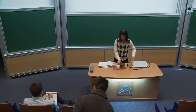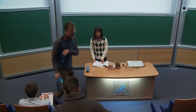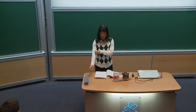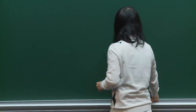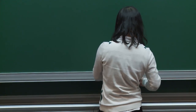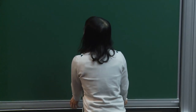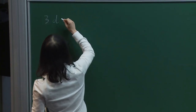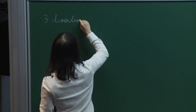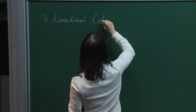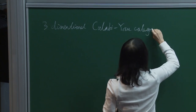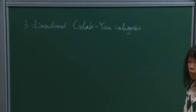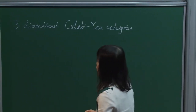Thank you for the invitation — it's my great pleasure to give a talk here. Today I'm going to talk about the two Calabi-Yau categories and the Motivic Donaldson-Thomas invariants associated to such categories for three-dimensional Calabi-Yau categories. The Motivic Donaldson-Thomas invariants were introduced by Kontsevich-Soibelman via two approaches.